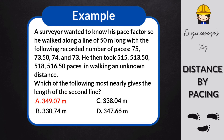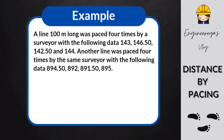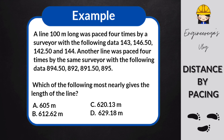The final answer for this example is letter A, 349.07 meters. We have another example: a line 100 meters long was paced 4 times by a surveyor with recorded data. Which of the following most nearly gives the length of the line? A: 605 meters, B: 612.62 meters, C: 620.13 meters, D: 629.18 meters.